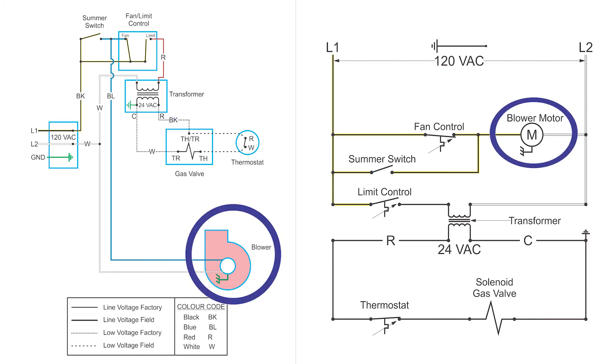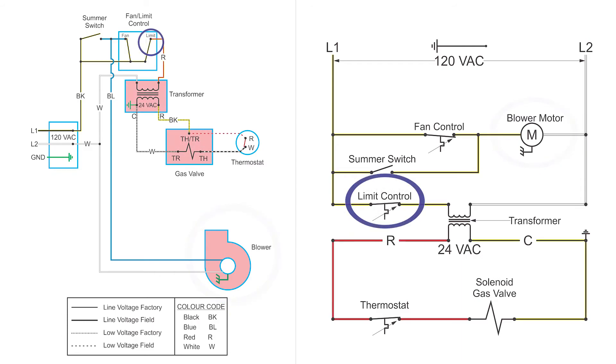So the burner goes off, the blower continues to run, and when the furnace gets down to a good temperature, the limit closes again, and the burner fires up again.